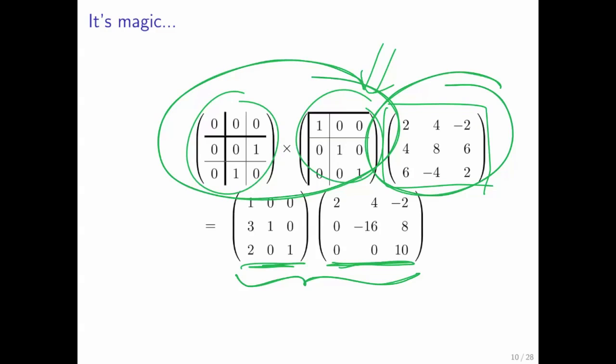So the net effect is the same as if you swapped it up front, but you're actually doing it as part of the algorithm, as you find out that you need to swap rows.